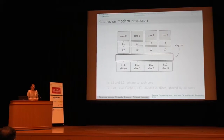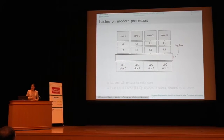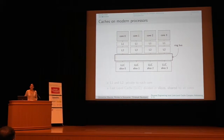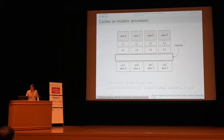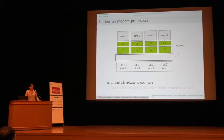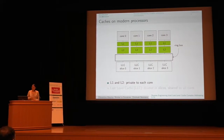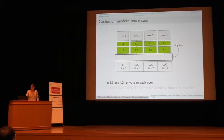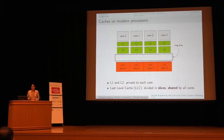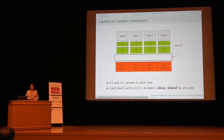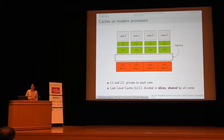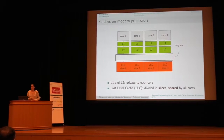This is a high-level view of how the processor looks. You have several cores — four cores here — and a hierarchy of different levels of caches. You first have level 1 and level 2, which are private to each core, meaning core 0 can only access its own L1 and L2. Then you have the last-level cache, which is divided into different slices — as many slices as cores — but they are all shared by all cores, meaning core 0 can access slices 0, 1, 2, and 3.